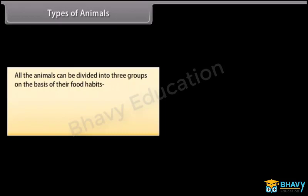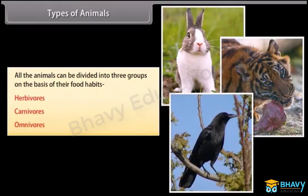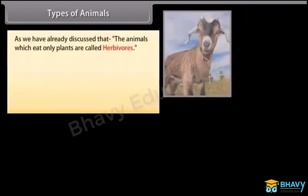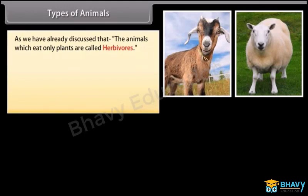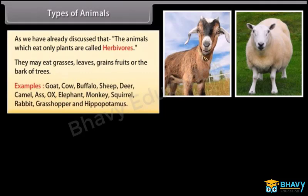Types of Animals. All the animals can be divided into three groups on the basis of their food habits. The animals which eat only plants are called herbivores. They eat grasses, leaves, grains, fruits, or the bark of trees. Examples: Goat, Grasshopper, and Hippopotamus.